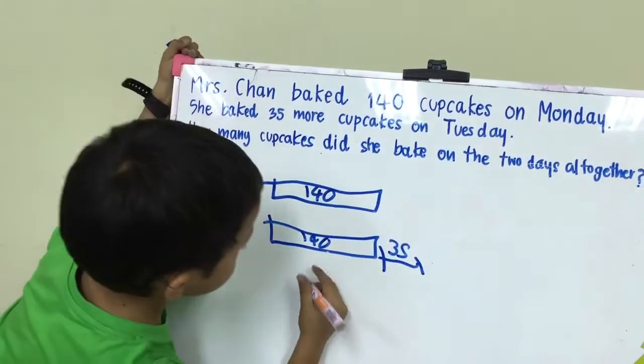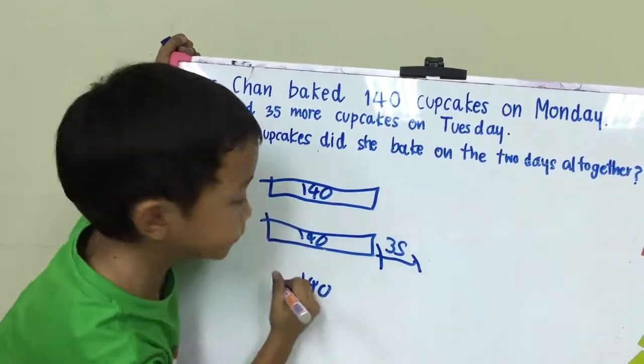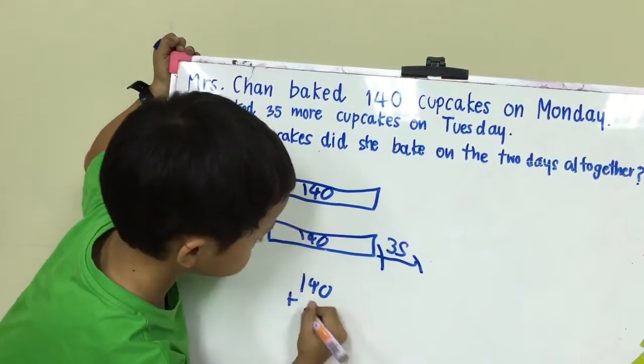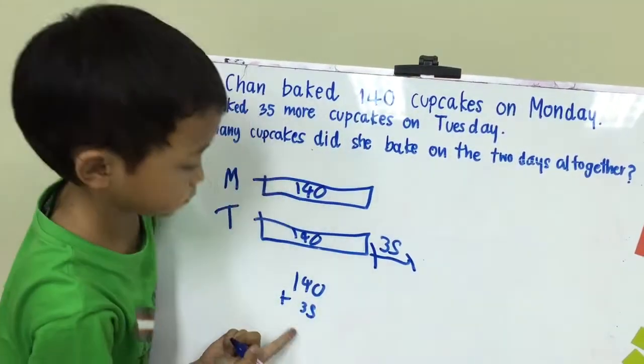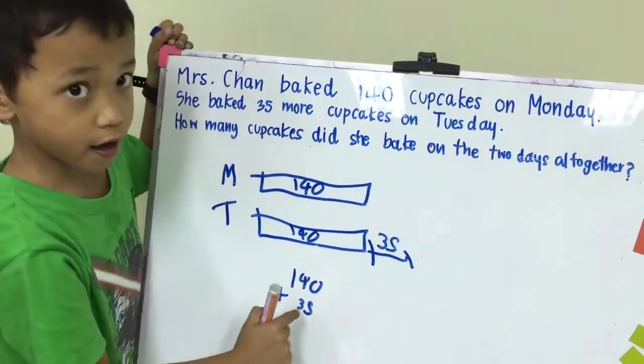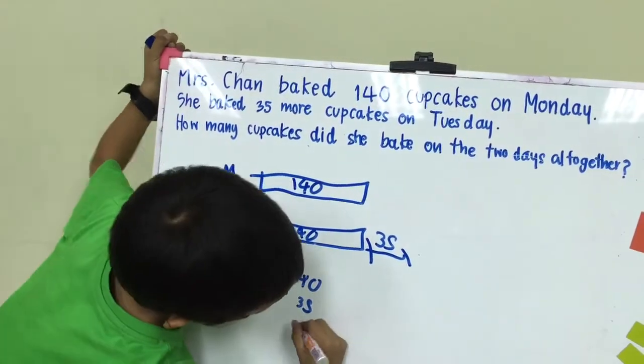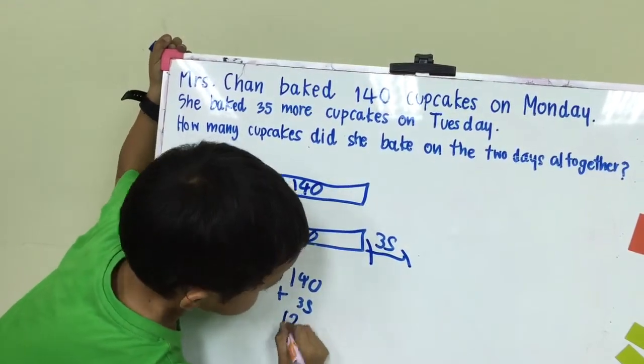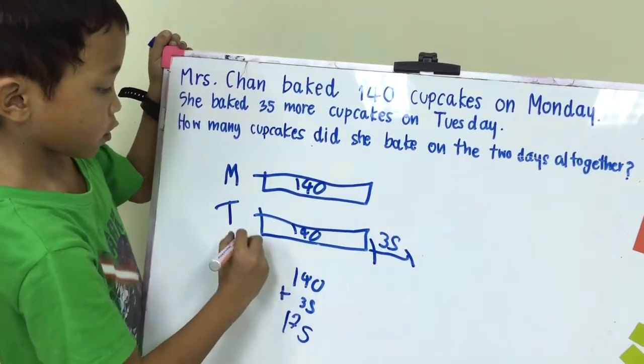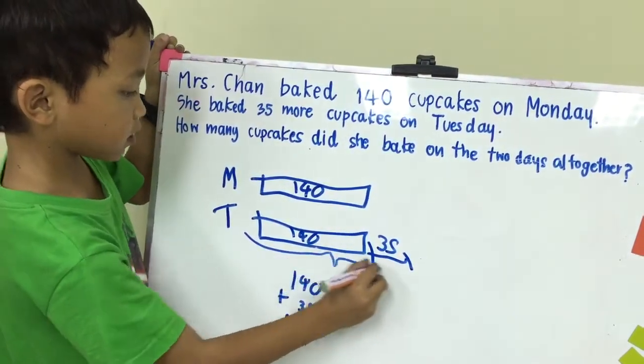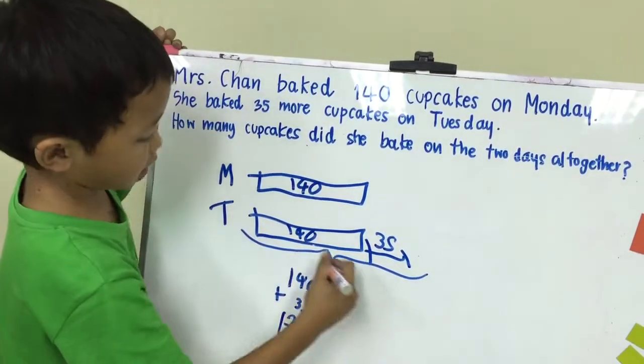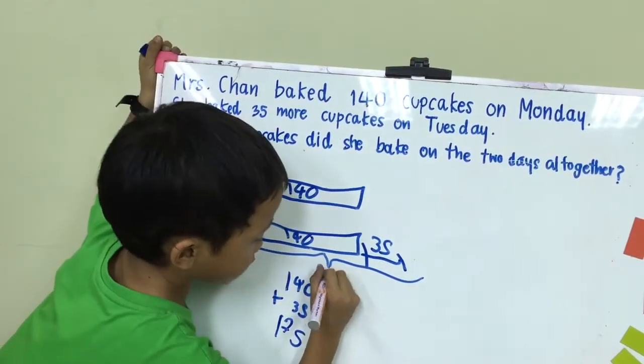Then we need to add this one. Add together. So, 175. Then you need to go like this. Give me the answer. No, 75.